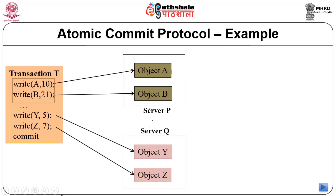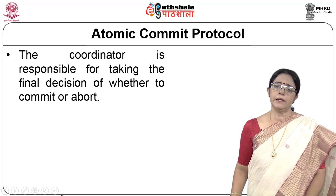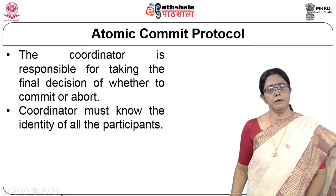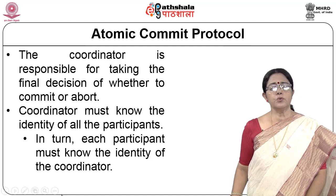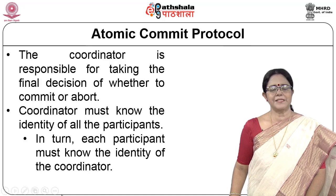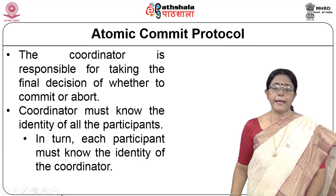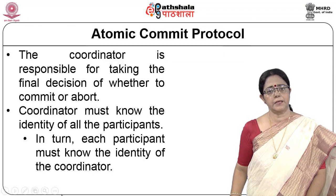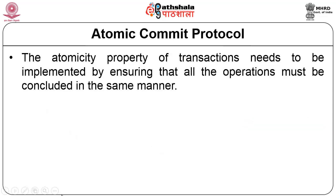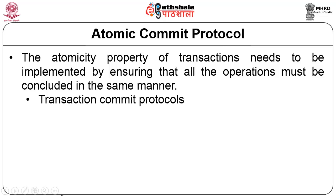Server P contains two objects a and b, while server Q contains the other two objects y and z. This makes it a distributed transaction — the transaction has to access both servers to execute all four instructions. The coordinator in atomic protocol will take the final decision to abort or to commit. The coordinator needs to know all the participating servers' addresses (basically IP addresses or RPC endpoints), and in turn, each participating server also needs to know which server is acting as the coordinator. The atomicity property needs to be implemented by ensuring all operations conclude in the same manner — commit or abort — by all sub-transactions.